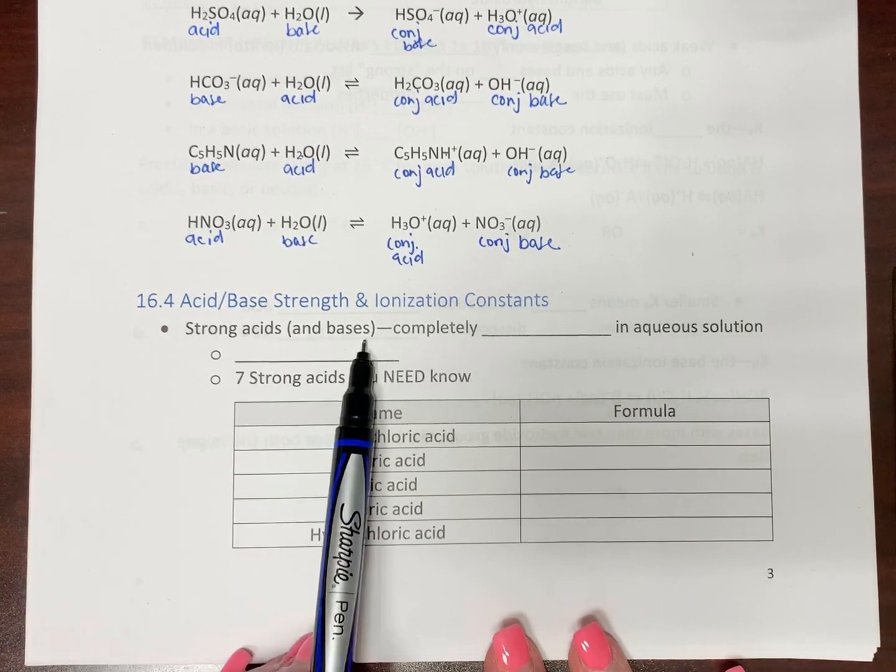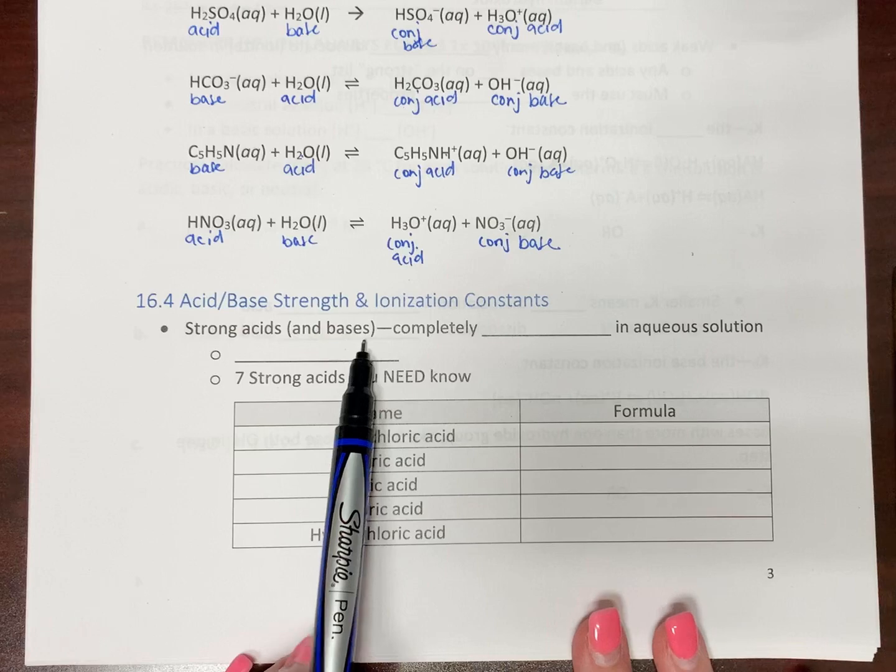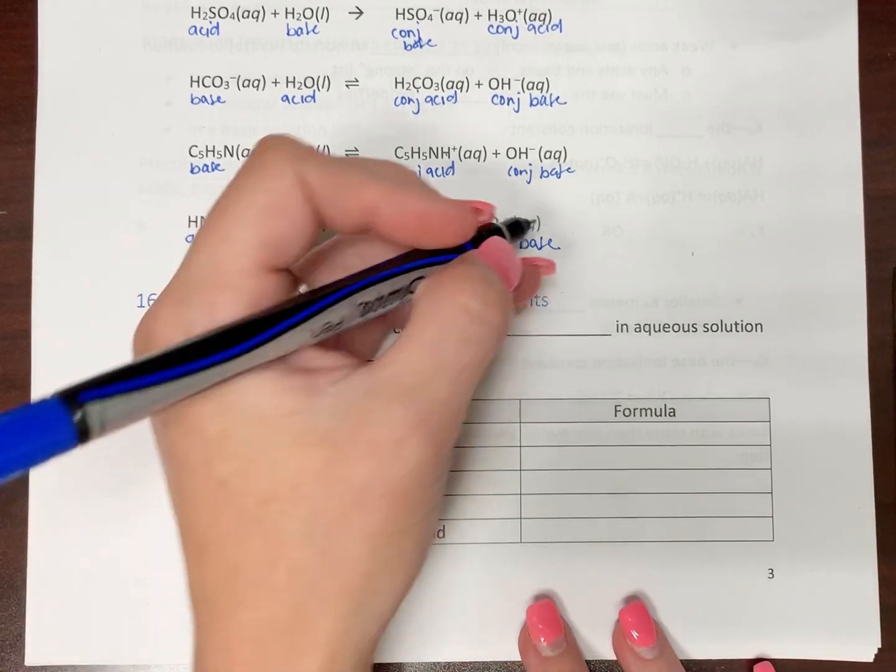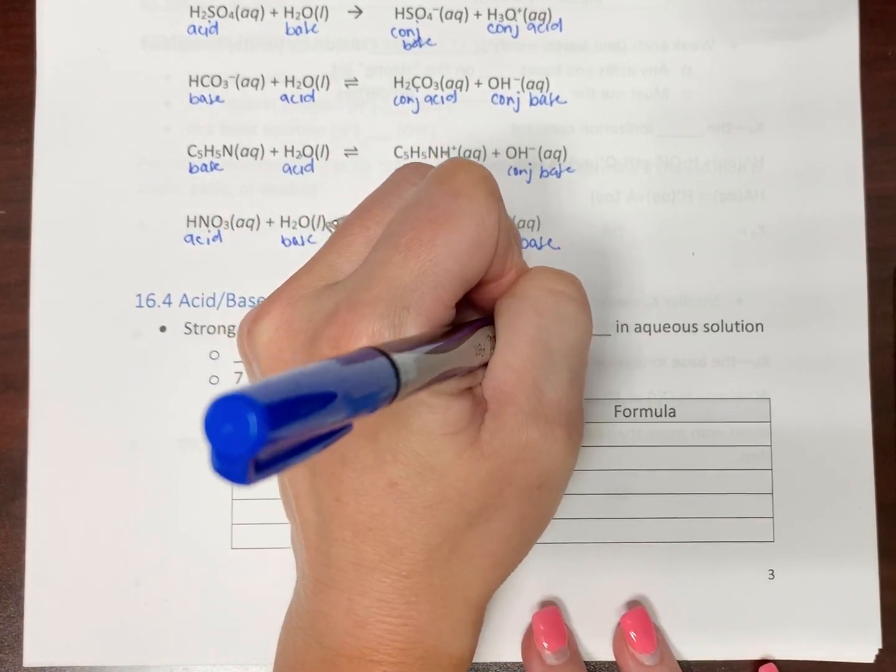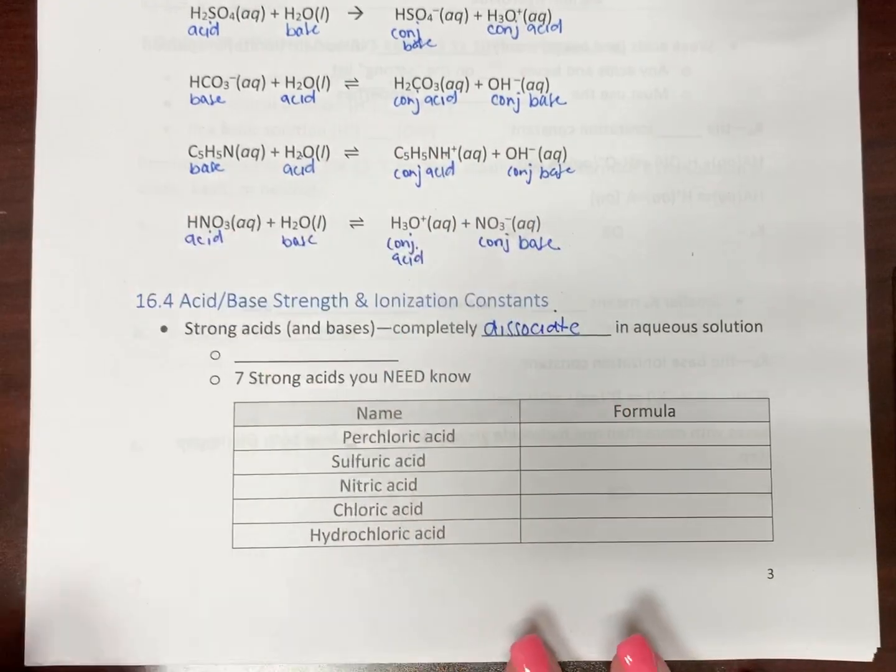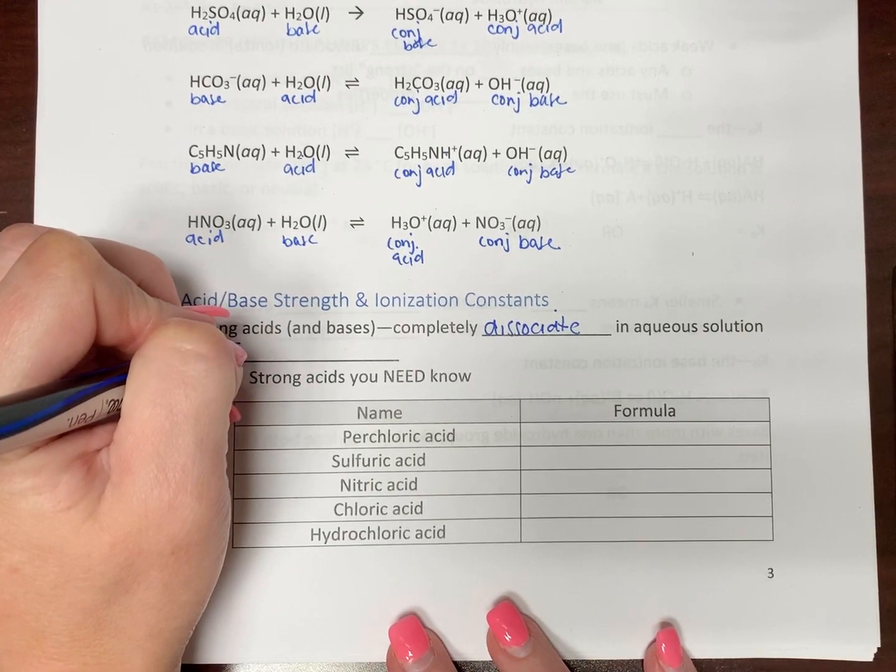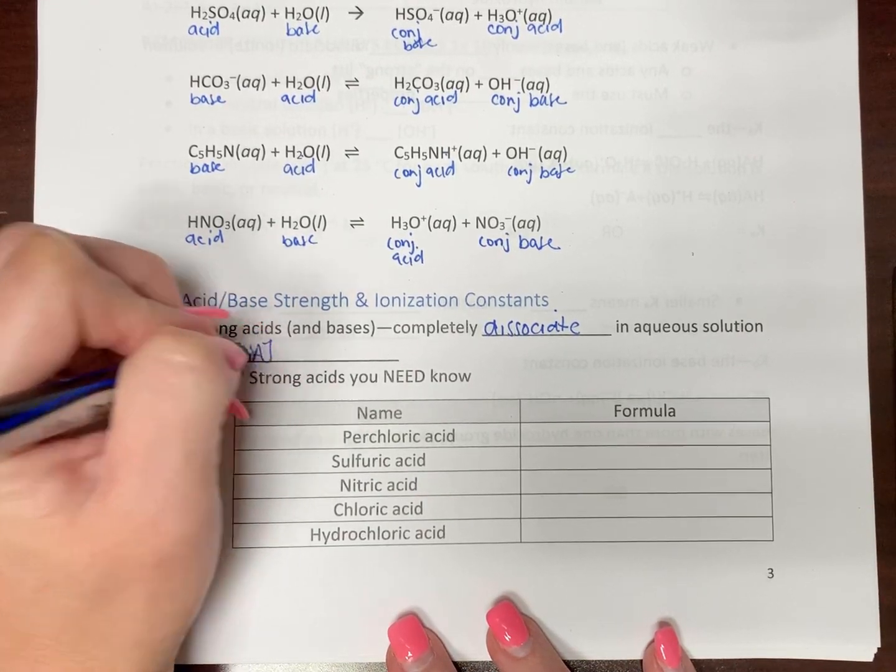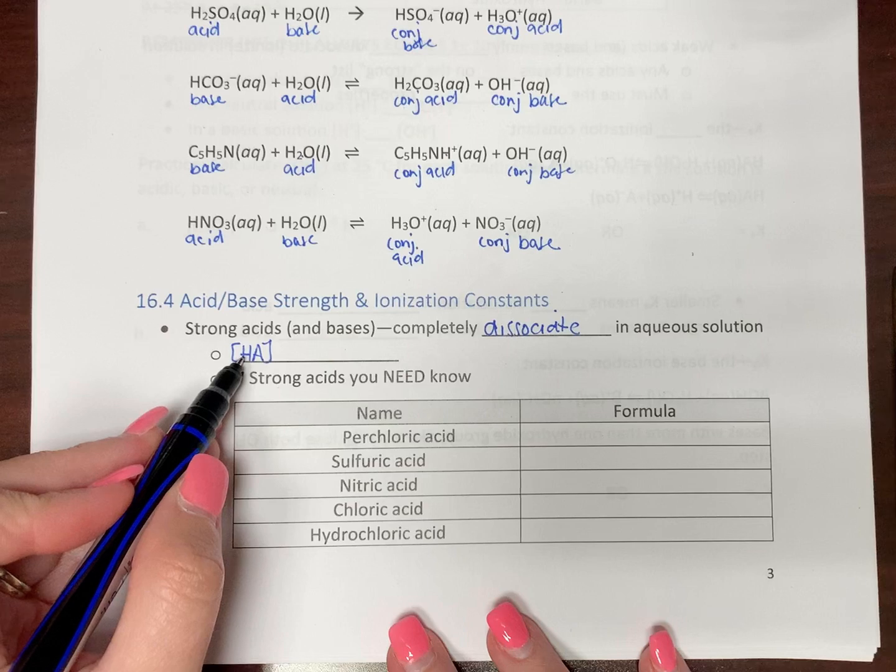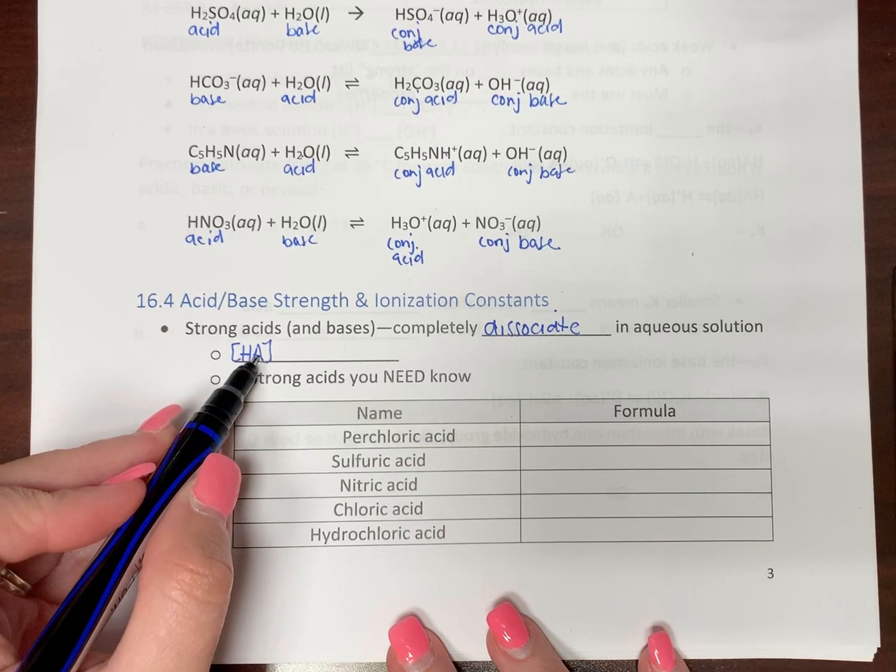So strong acids and strong bases - these completely dissociate in aqueous solution. So that means the concentration of your acid, which is abbreviated because we're saying acids are proton donors, A for acid.